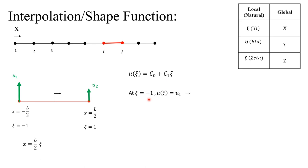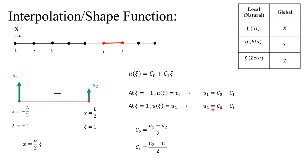We have two boundary conditions, so we can find these two unknowns. At ξ = -1, the displacement is u1, so u1 = c₀ - c₁. At ξ = 1, the displacement is u2, giving us the second equation. With two equations and two unknowns, we can find our coefficients and plug them into the linear equation to find displacement as a function of the coordinate, based on the nodal displacements u1 and u2.